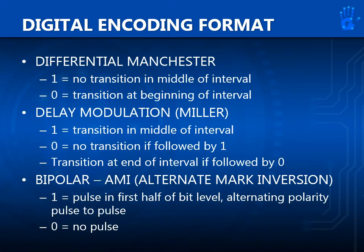Differential Manchester: for bit 1, no transition in the middle of the interval. For bit 0, a transition at the beginning of the interval will occur. Delay modulation, or Miller: for bit 1, a transition in the middle of the interval will occur. For bit 0, no transition if followed by 1, and a transition at the end of the interval if followed by a 0. For bipolar-AMI, or alternate mark inversion: when bit is 1, a pulse in the first half of the bit period with alternating polarity pulse to pulse. For continuous 1s, different values of V will alternate. When bit is 0, there will be no pulse and the voltage level stays at 0.